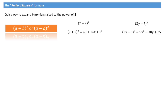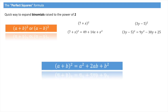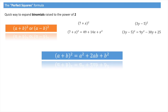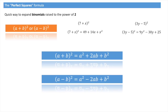Now here come the formulas — definitely make a note of these as we're going to be using them. We have a plus B squared, which is equal to a squared plus 2ab plus B squared. The second formula is a minus B squared, which is equal to a squared minus 2ab plus B squared. Make a note of these as we're about to see a few worked examples.